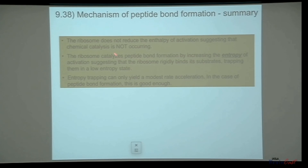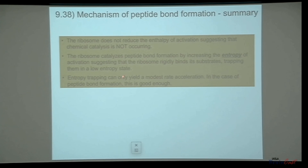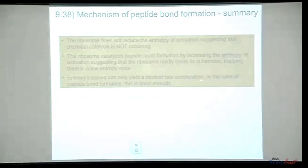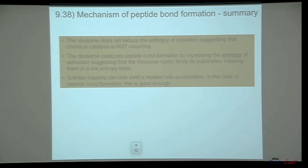To summarize: the ribosome does not reduce the enthalpy of activation, suggesting that chemical catalysis is not occurring. The ribosome catalyzes peptide bond formation by increasing the entropy of activation, suggesting that the ribosome rigidly binds its substrates, trapping them in a low entropy state. Entropy trapping can only yield a modest rate acceleration — in the case of peptide bond formation, this seems to be good enough.